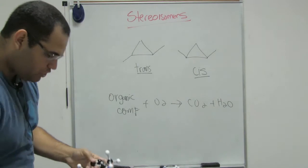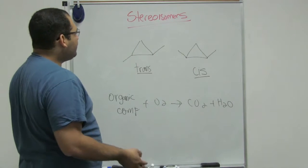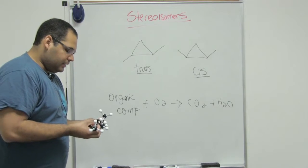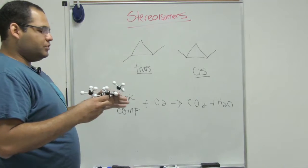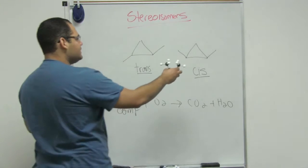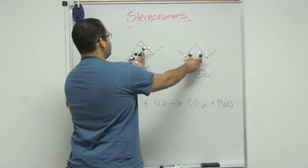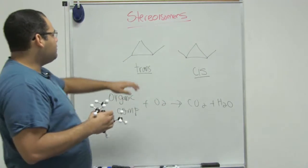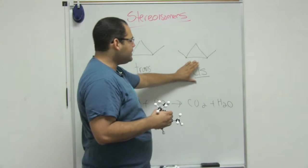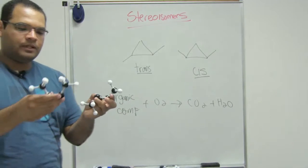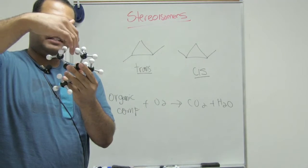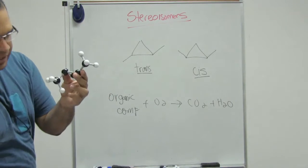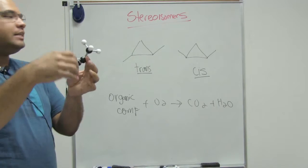A lot of students have the idea that for stereoisomers, the trans is always more stable than the cis. I have these two here with my model kit — this being the cis and this being the trans. I just wanted to emphasize that not always will my trans be more stable than my cis. In this particular example, because I have some sterics going on, my cis will be least stable compared to my trans where the steric interaction is not happening.